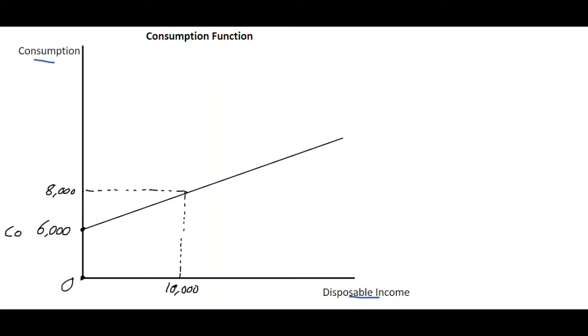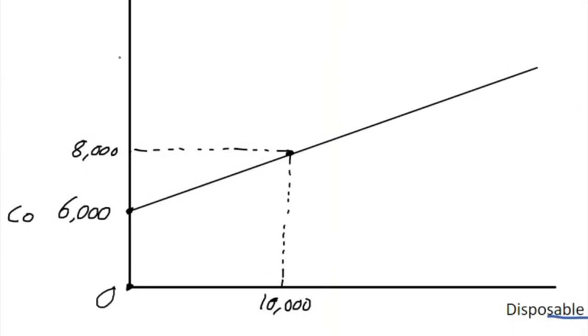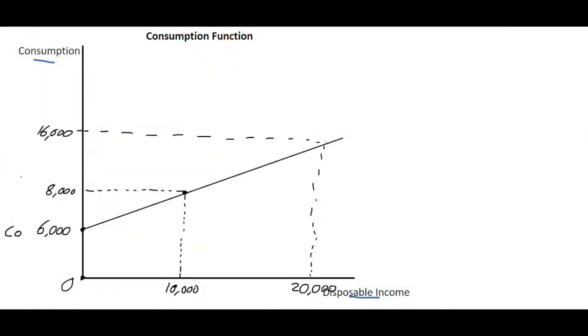Now let's say that over time the economy changes and it goes up to sixteen thousand euro in terms of consumption, and the disposable income level is at twenty thousand. What the consumption function does is it's tracing out the relationship between consumption and disposable income.